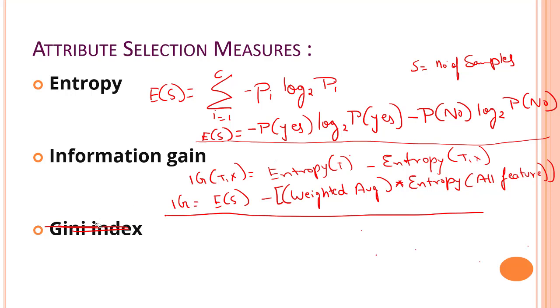The last thing, let's learn about what do we mean by Gini index. Gini index is a measure of impurity or purity used while creating a decision tree in the CART algorithm, regression and classification tree algorithm. Information gain is very much important for ID3. Gini index is something which is quite important for our CART algorithm.